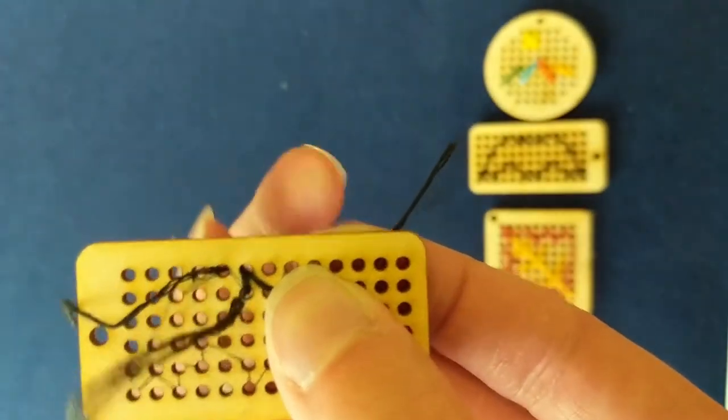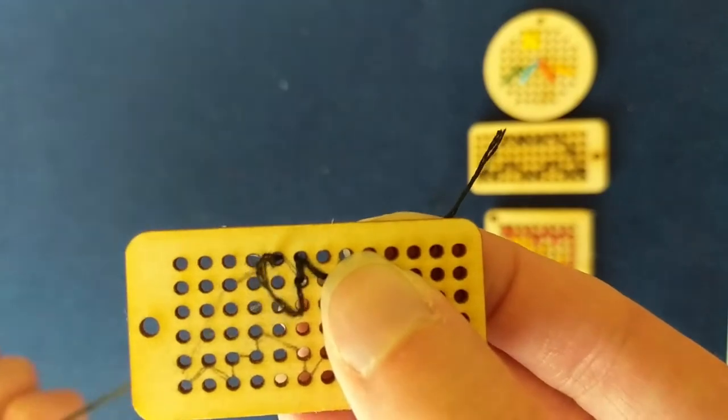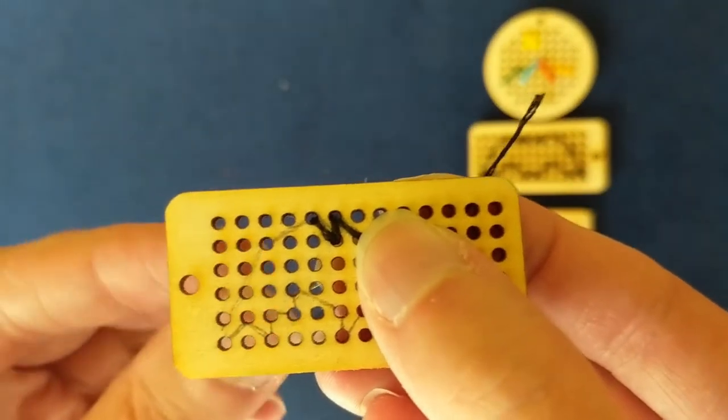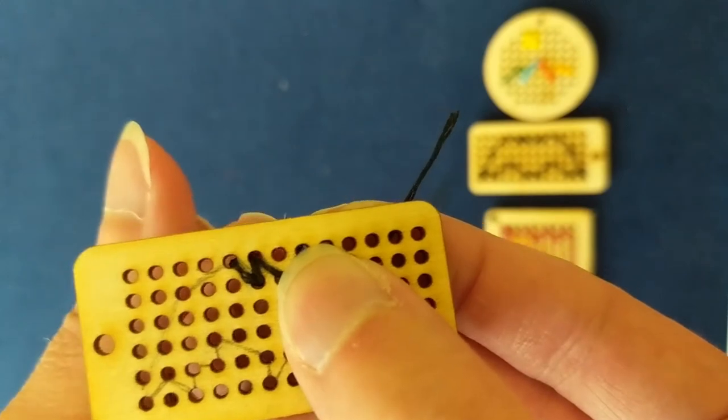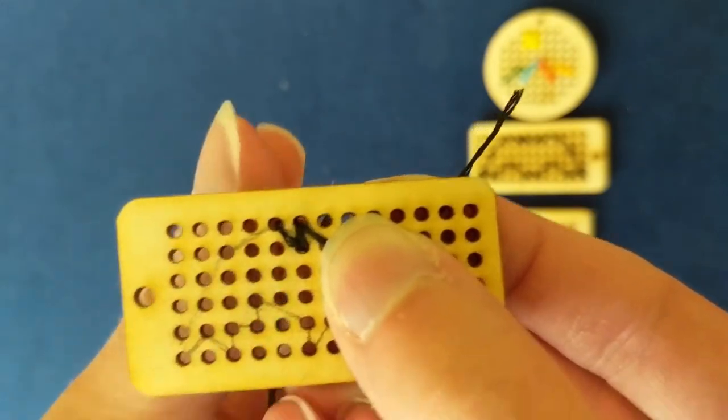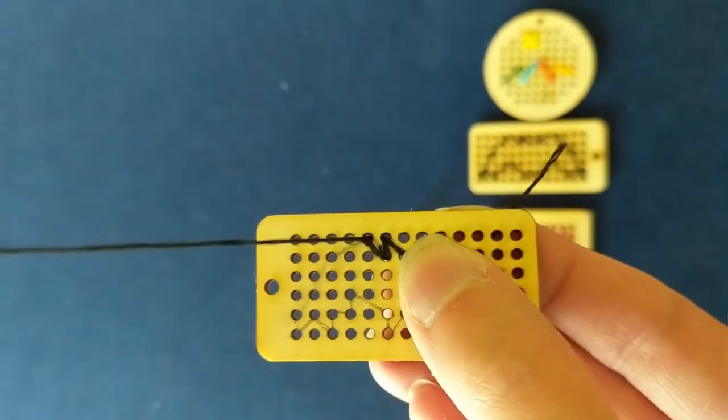And if your design has multiple colors, you would just go back and tie that knot before you switch colors, so that you've tied off every individual color you're using.